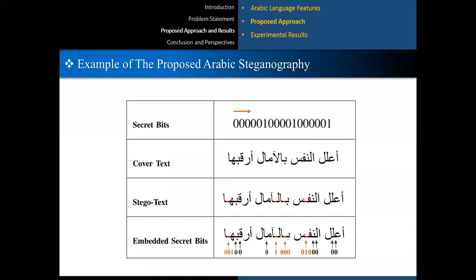To understand the working of the proposed technique, we provide an example of using the proposed steganography algorithm, where the objective is to embed a given secret bit into a given cover text. The secret bit will be embedded into an Arabic cover text taken from right to left. The first letter is Alif, which does not accept Keshida, so it will be ignored. The second letter is Alif, which accepts Keshida but does not contain any points; according to our proposed bit patterns, it can only hide the bit sequence 001. However, since the first three bits of the secret data are 000, we will only embed the first zero bit in this position.